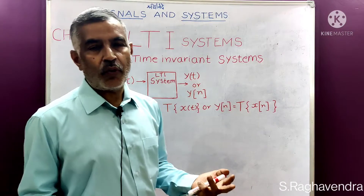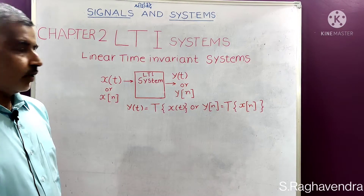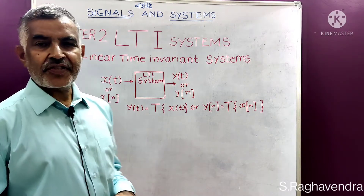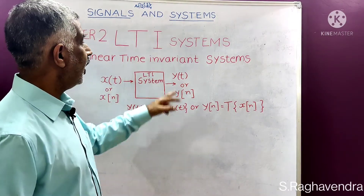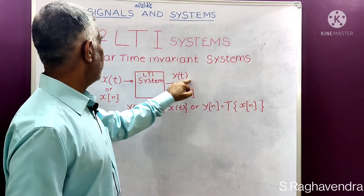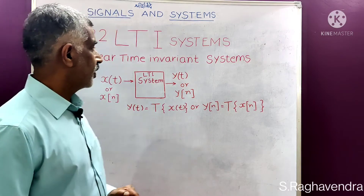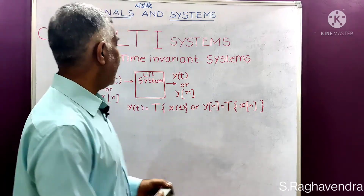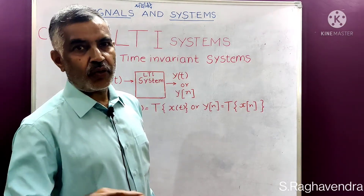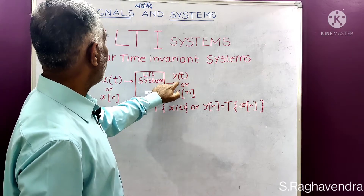Now the question arises: under this chapter, what are we going to study? The first thing we need to do is relate output to input. In how many ways can we relate the output of an LTI system to the input? There are four basic methods of relating output with input.